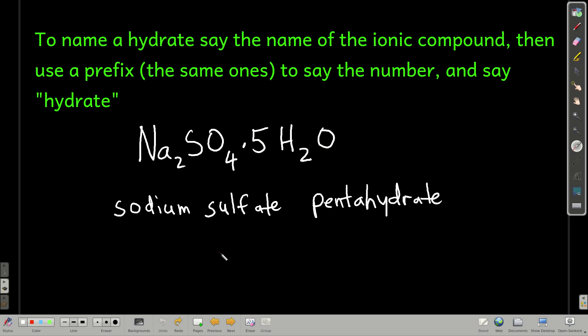So how do we name these? All you do is say the name of the ionic compound, just like we learned in nomenclature part one. And then we use the prefix, the same ones we just used a minute ago, to say the number that's in front of the waters, and then say the word hydrate. So the ionic compound here is sodium and this is one of those polyatomic ions which you're starting to memorize hopefully. It's sulfate. So this is sodium sulfate, no Roman numeral, because sodium is one of those elements that you're not allowed to use a Roman numeral for. It's an alkaline metal.